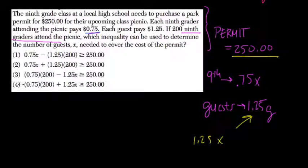So here, I would actually use either choice 3 or 4 because we're looking to see how many 9th graders need to attend. We're not looking for 0.75X. That would tell us how many 9th graders are attending. In fact, we're told how many 9th graders are attending, which is 200.